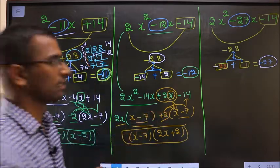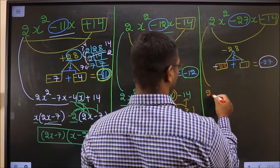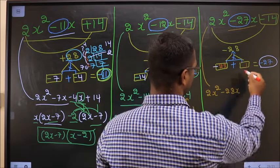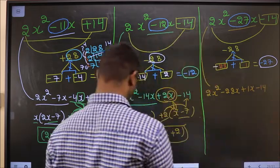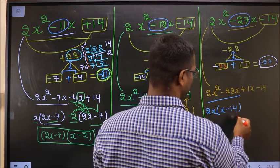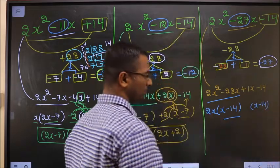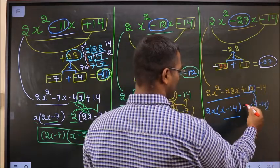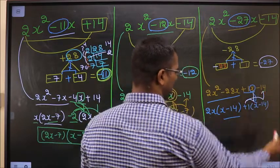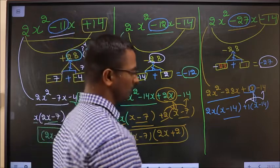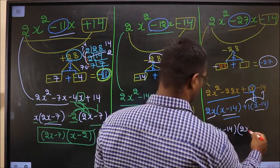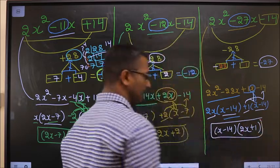For the third expression: 2x² - 27x - 14 becomes 2x² - 28x + 1x - 14. Taking 2x common from the first two terms gives 2x(x - 14). From the last two terms, taking +1 common gives +1(x - 14). So the factorized answer is (x - 14)(2x + 1). If in doubt, multiply back to verify you get the same expression.